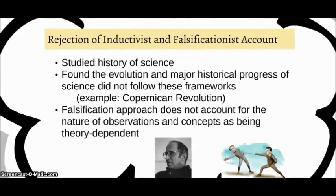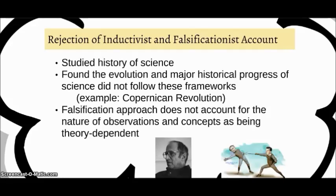Kuhn rejected the inductivist and falsification accounts for how science works. He studied the history of science and found that the evolution and major historic progress of science did not follow this framework. An example of this is the Copernican Revolution, which we'll talk about shortly. Kuhn also noticed that the falsification approach to understanding science does not account for the nature of observations and concepts as being theory dependent.